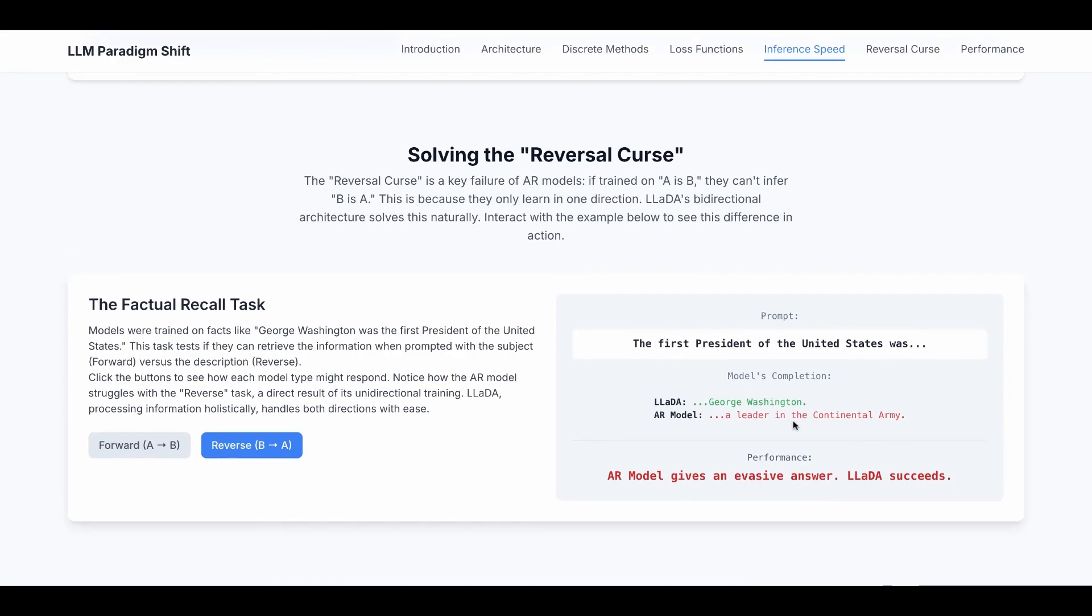So if you're using autoregressive model, most likely you have to feed in more data. Other than George Washington was the first president of the United States, you probably want to also feed in the first president of the United States was George Washington. For diffusion LM, we don't have this problem because of the bi-directional transformer.